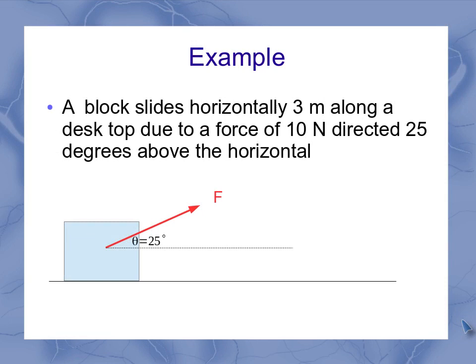Now let's give a quick example here. If I've got a block and it's sliding horizontally three meters along a desktop due to a force of 10 newtons directed 25 degrees above the horizontal. So I've got my force here. And my force isn't straight down, but it's at an angle of 25.